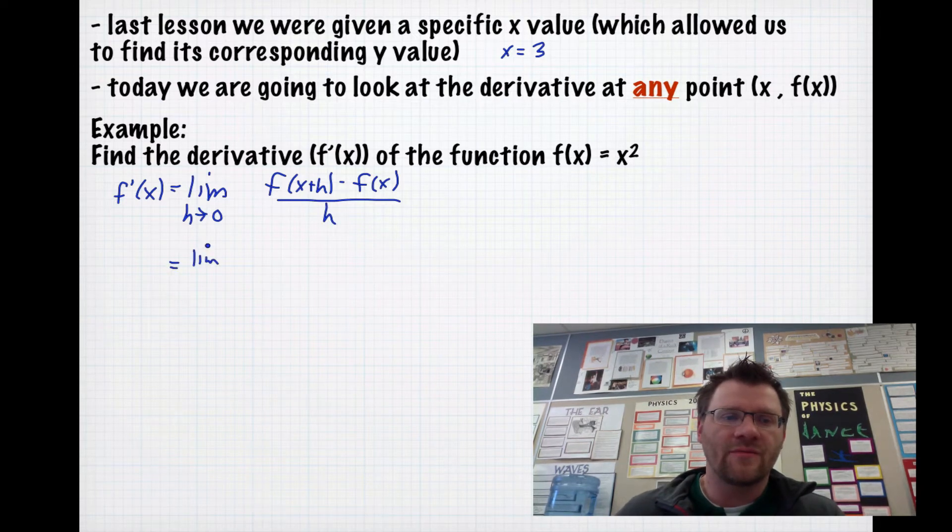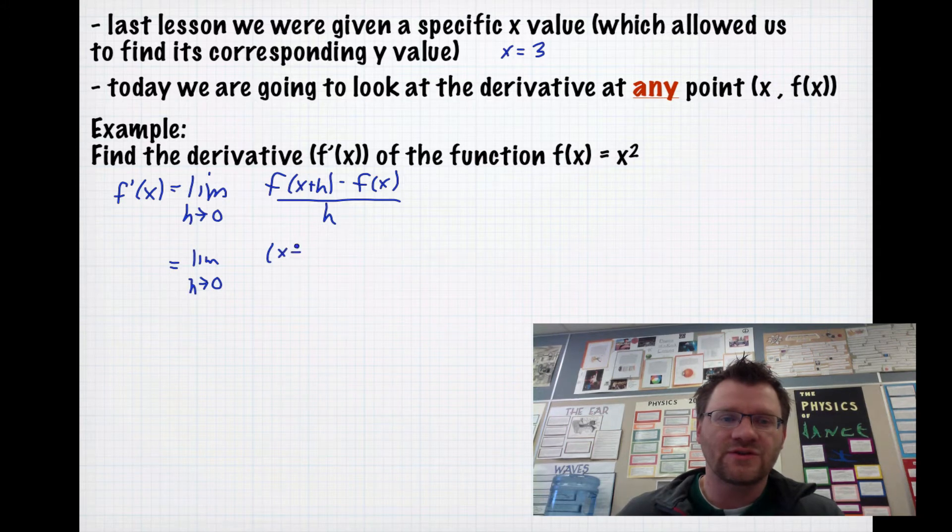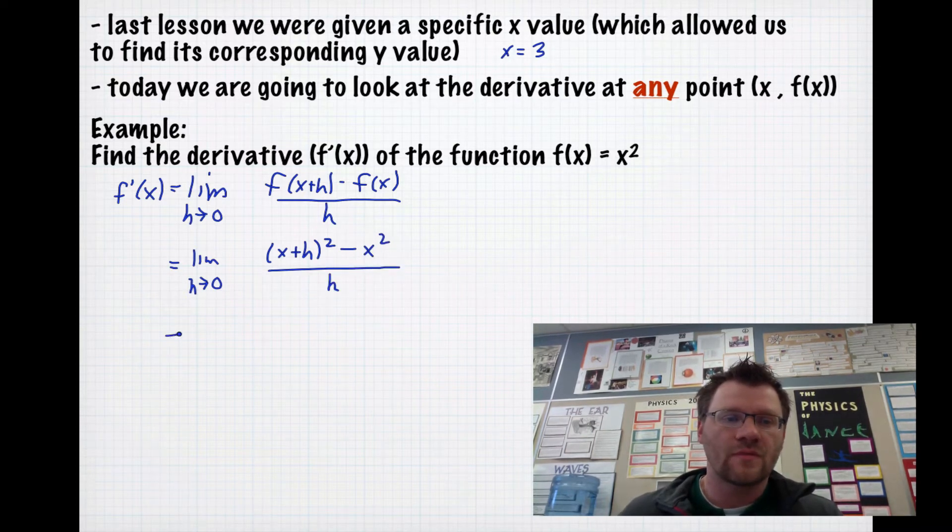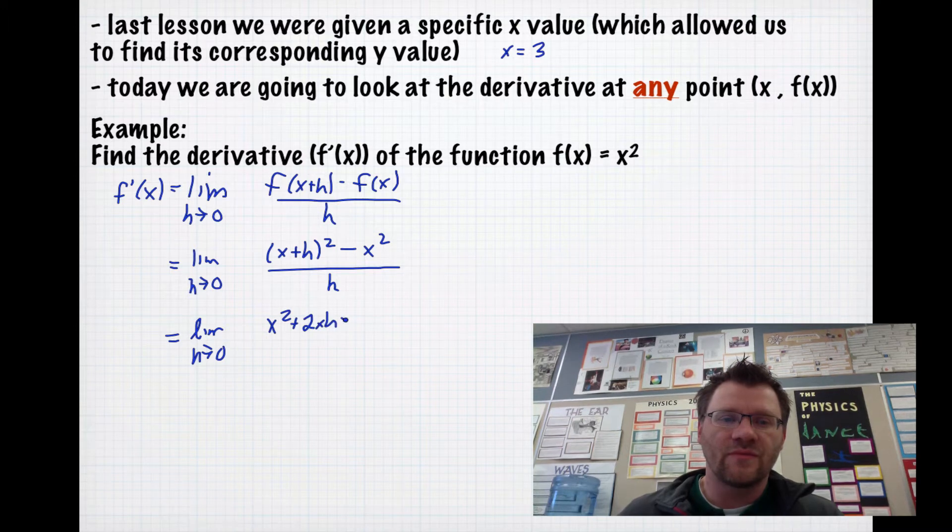As the limit of h approaches 0, f(x+h), instead of x in our function, we're going to put in x+h. So that makes it (x+h)², and f(x) is just x², so we're going to leave that as x², and that's all over h. As the limit of h approaches 0, we square x+h, which is x² + 2xh + h² minus x², all over h.